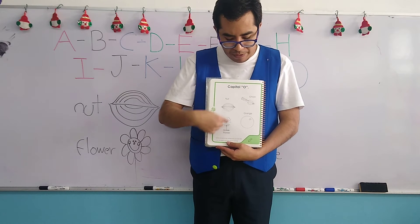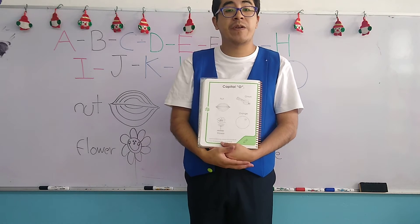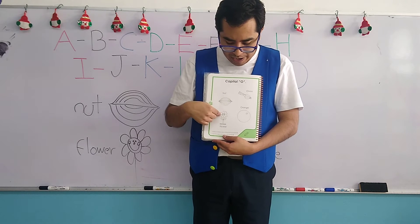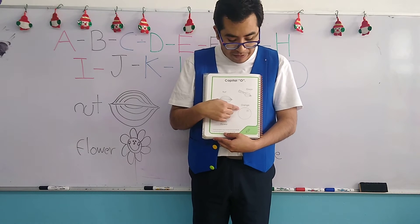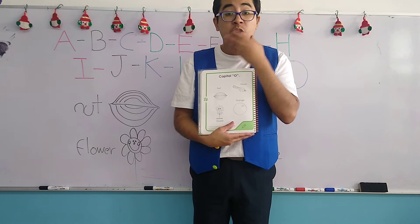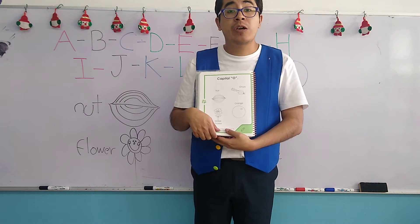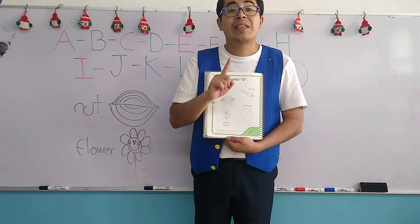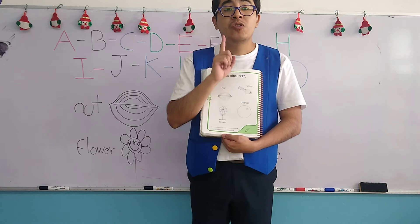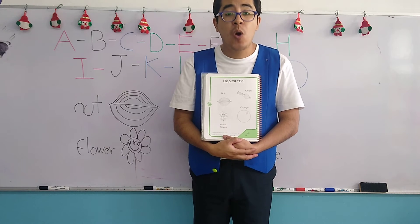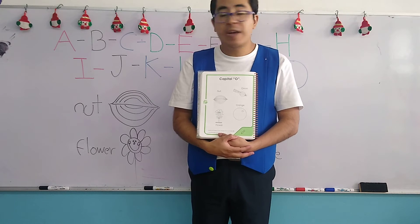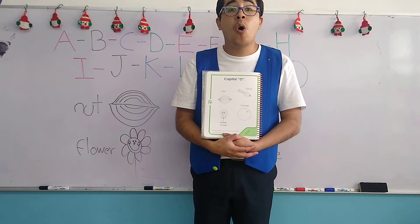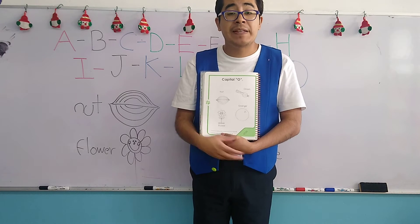So here are the instructions. On this page, we have four objects: one, two, three, and four. We have a nut, an onion, a flower, and an orange. With your pencil case and your colors, you are only going to paint — colorear — only the objects that begin with the letter O.